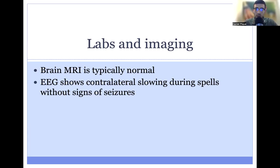Patients with AHC typically have a normal brain MRI. If you were to do an EEG during one of these spells, you might see contralateral slowing — so on the opposite side compared to what's being affected in the body. For example, if the left side of the body is paralyzed, you'd expect to see slowing of the right half of the brain. These spells are different from seizures, which you could also detect on EEG, but would be different and independent from these spells.